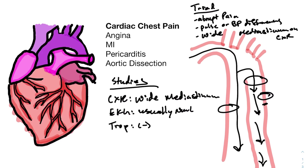The studies for suspected aortic dissection are similar to other cardiac causes of chest pain. On chest X-ray, you're going to see that widened mediastinum. The EKG is usually going to be normal — you usually don't have a disruption of electrical activity, which makes sense because the process is happening outside of the heart. The troponin is usually negative because you're not having actual cardiac tissue injury; again, everything is happening outside of the heart.